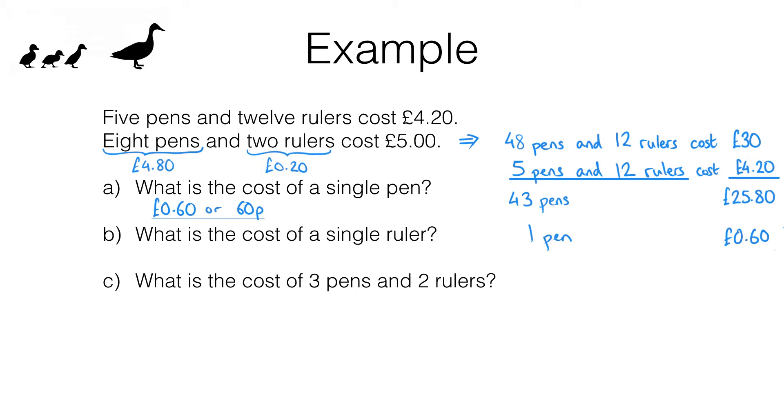So if two rulers cost 20 pence, hopefully you can see that each ruler costs 10 pence and there is our answer.